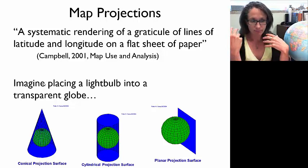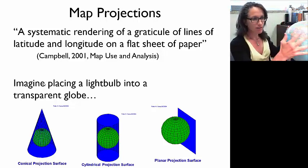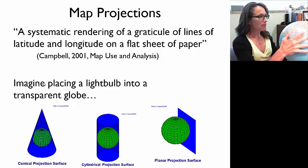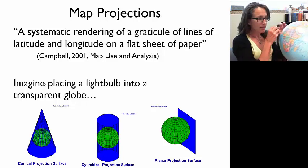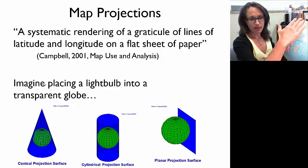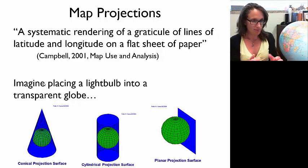One way to picture this, though this is not really how it's done, is you can imagine taking this globe, placing a surface around it with a light bulb in the middle of the globe, and it projects what's on the globe onto that surface. Then we can unroll the surface onto a flat map.